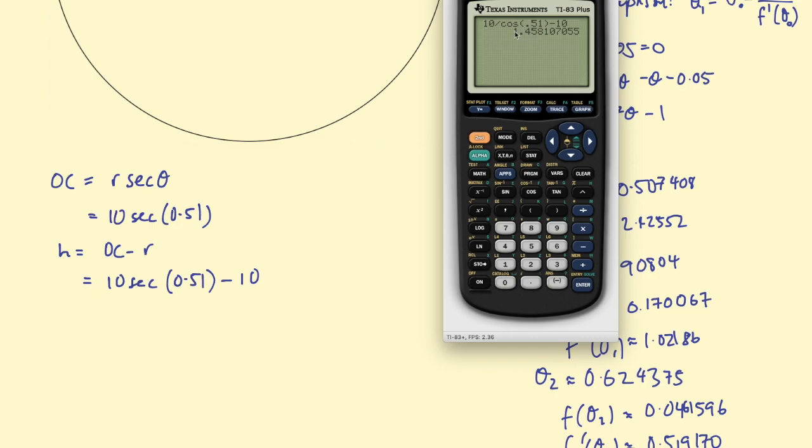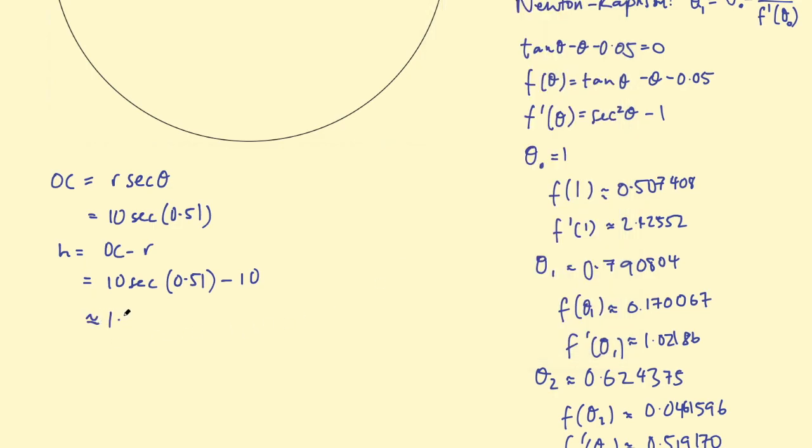Rounding off to three significant figures, this is 1.46. After all of that, my approximate solution for h is 1.46. If the radius was in meters, this would be 1.46 meters, for example.